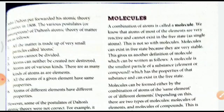However, some of the postulates of Dalton's atomic theory were not correct. For example, it was assumed that the atom is indivisible, but studies showed that the atom can be further divided into fundamental particles like electrons, protons, and neutrons.